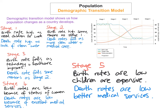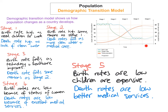If you'd like to know an example for each one of these stages: stage 1 would be a tribal group in Africa, stage 2 would be the country of Mali, stage 3 would be the country of Brazil, stage 4 would be us — the Republic of Ireland — and stage 5 would be the country of Germany.